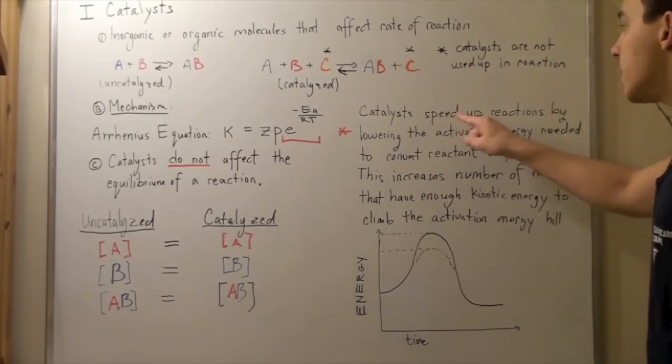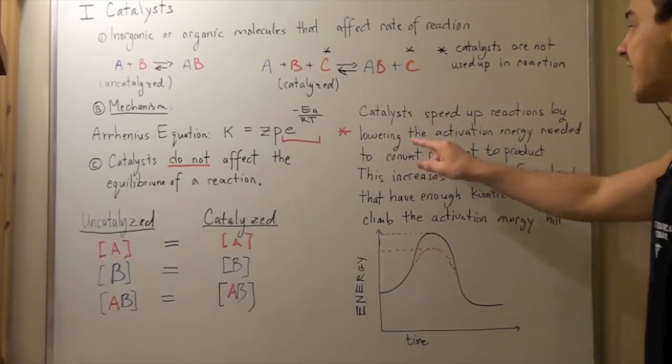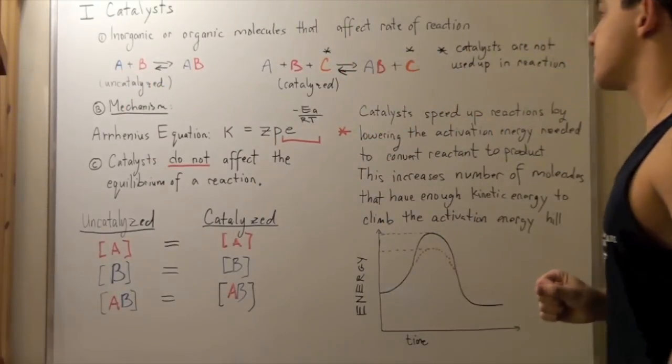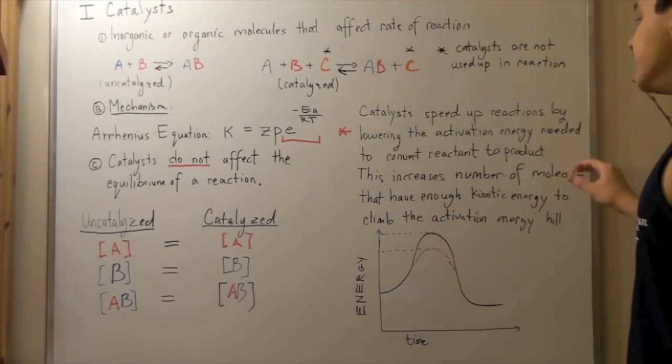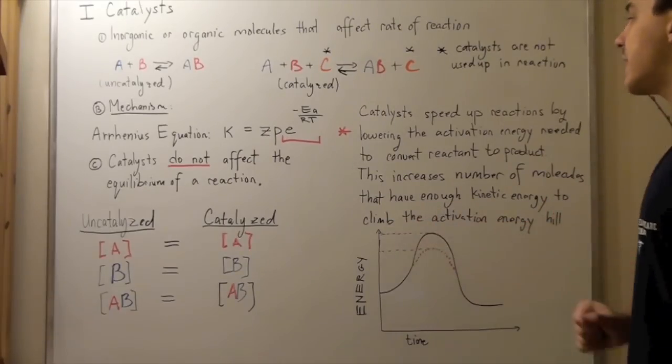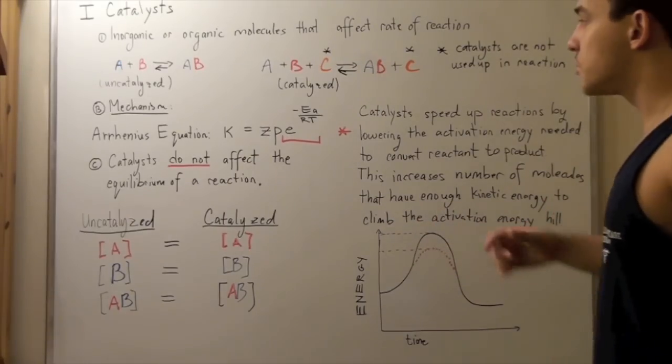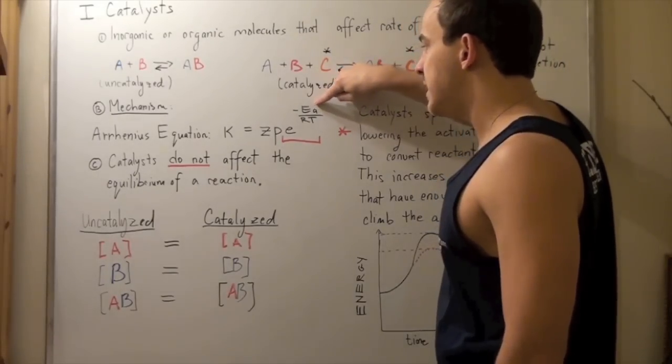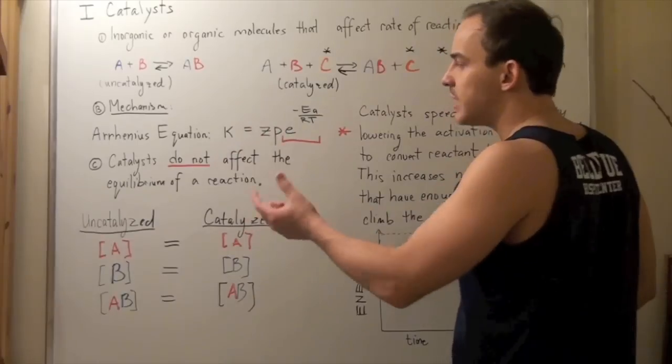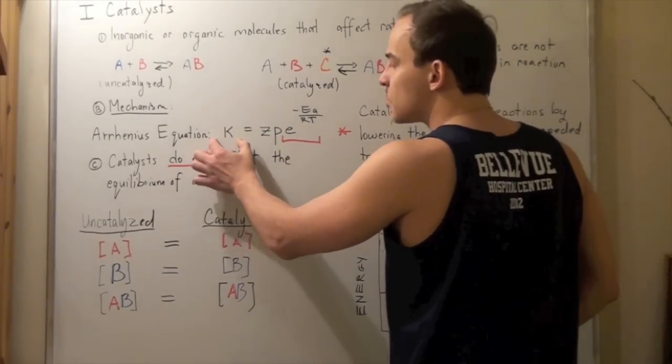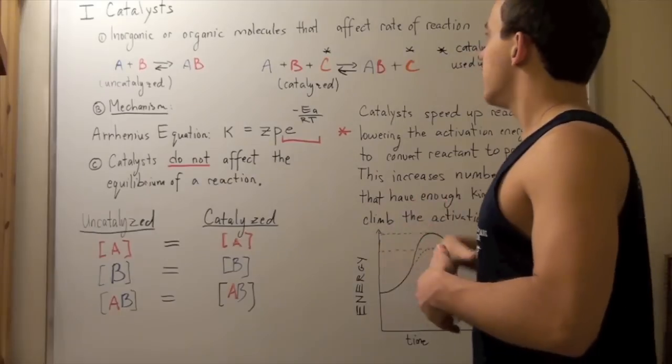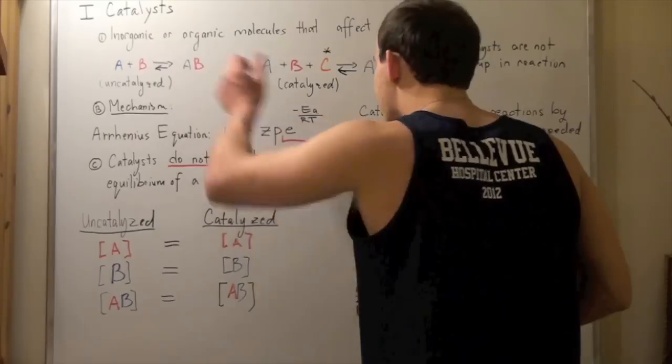Catalysts speed up reactions by lowering the activation energy needed to convert the reactants to products. This, in turn, increases the number of molecules that have enough kinetic energy to climb that activation barrier. It decreases this activation energy Ea, thereby increasing this E component. This, in turn, increases our rate constant, which is directly proportional to rate of reaction. That's how the rates of reactions are increased by catalysts.